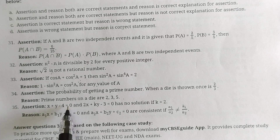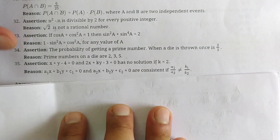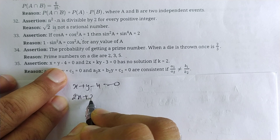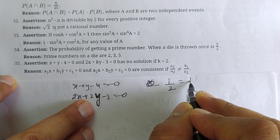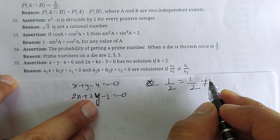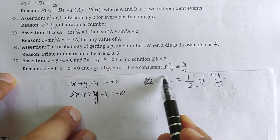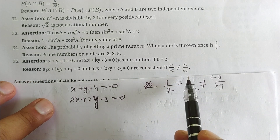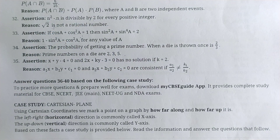Question 35: The assertion is that the system x + y - 4 = 0 and 2x + ky - 3 = 0 has no solution when k = 2. For no solution, a1/a2 = b1/b2 ≠ c1/c2. Checking: 1/2 = 1/k gives k = 2, and 4/3 is not equal, so the assertion is correct. The reason states a1/a2 ≠ b1/b2, which is wrong — that condition gives a unique solution, not no solution. So assertion is correct but reason is wrong, making option C the answer.